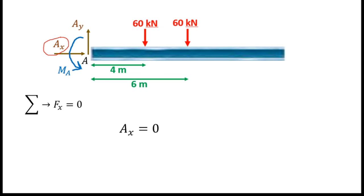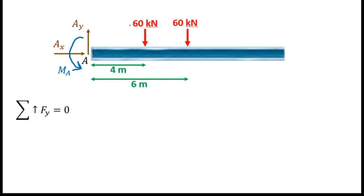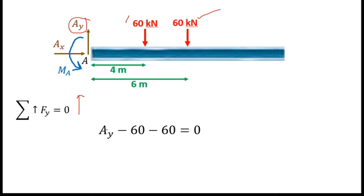First, I consider all horizontal forces. Looking at our free body diagram, there is no horizontal external load, so Ax equals 0. Next, I consider the sum of all vertical forces. There are vertical forces from both load resultants and from Ay. Taking the upward direction as positive, I write Ay minus 60 minus 60 equals 0, since both load resultants are downward forces.